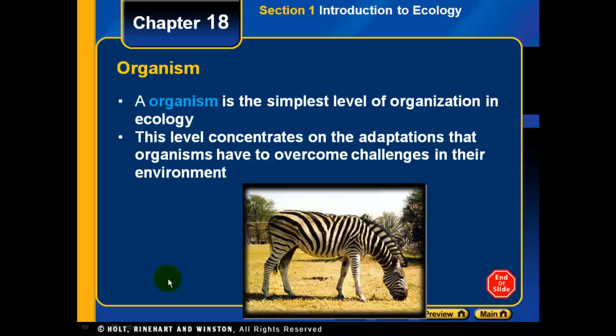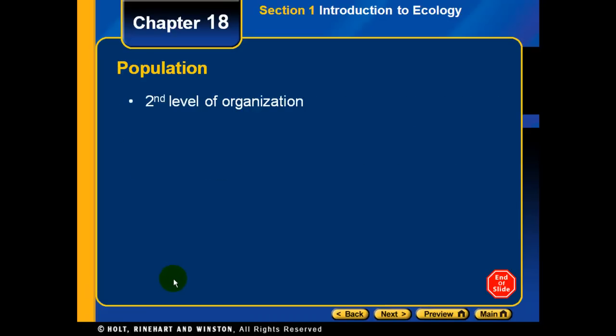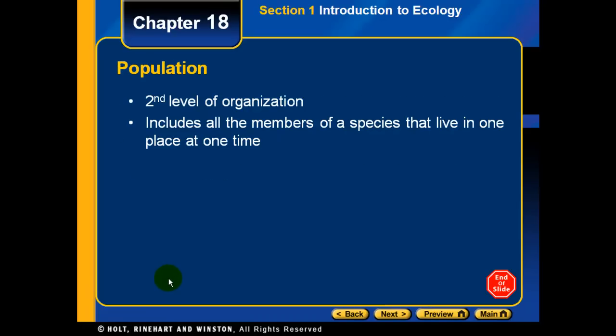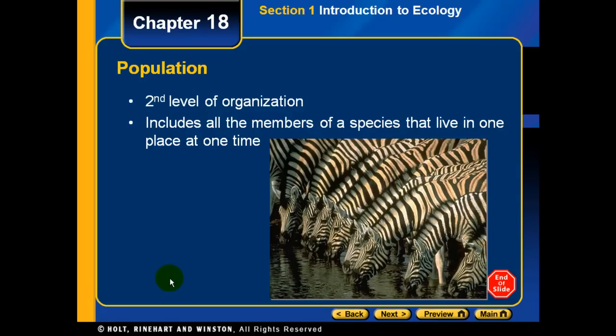The next level above that is the population, the second level of organization. If you take a whole bunch of organisms and put them together, you have a population. It includes all the members of a species that live in one place at one time — for example, a whole group of zebras living together at the same time.